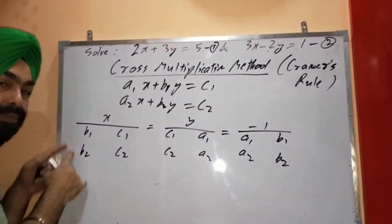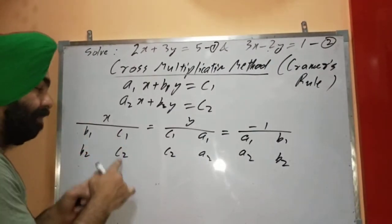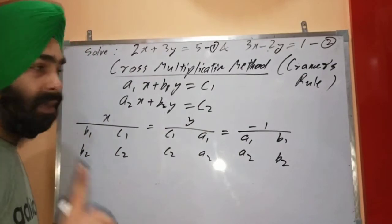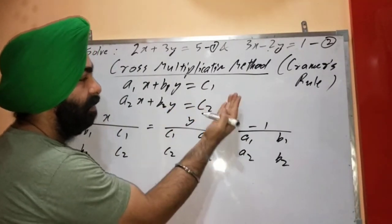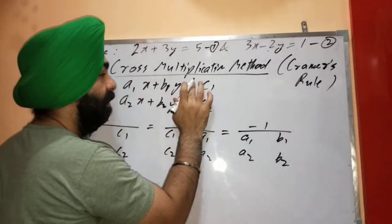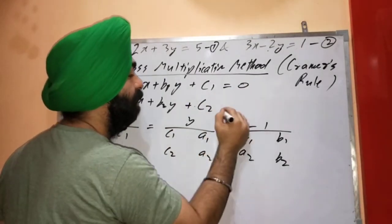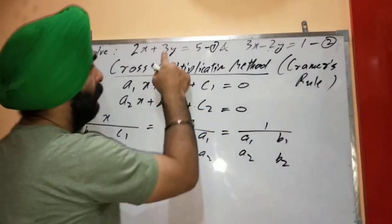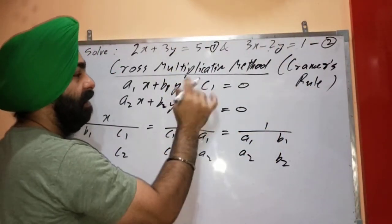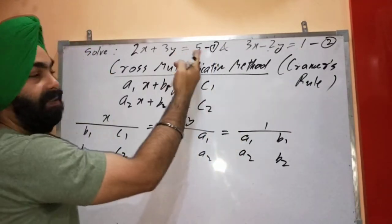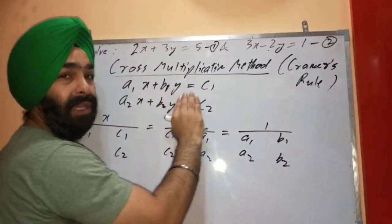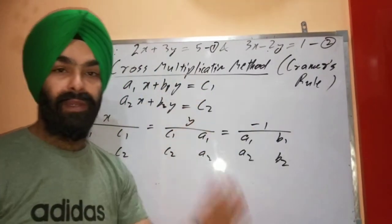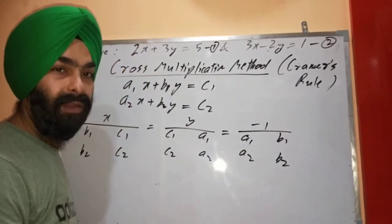Under y, continue from C: c1, c2, then a1, a2. Under minus 1: a1, a2, then b1, b2. One important note: if all constant terms are on the LHS (equal to zero form), then use plus 1 instead of minus 1. But since the constants are on the right-hand side, we use minus 1. This is related to determinants from 12th class mathematics — it is the shorter version of Cramer's rule. You make arrows from bottom to top for cross multiplication: b1×c2 minus b2×c1 for the x term.